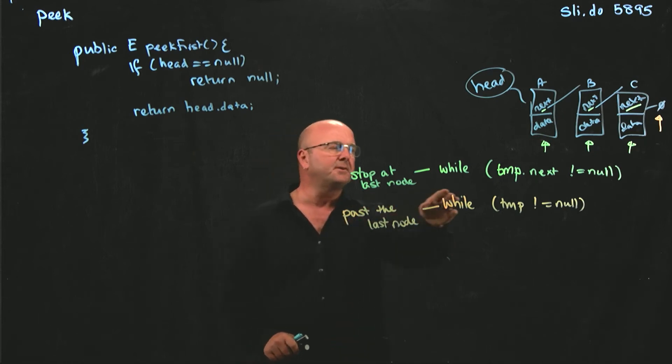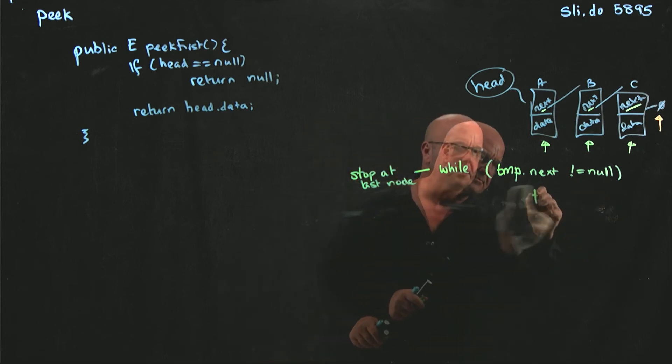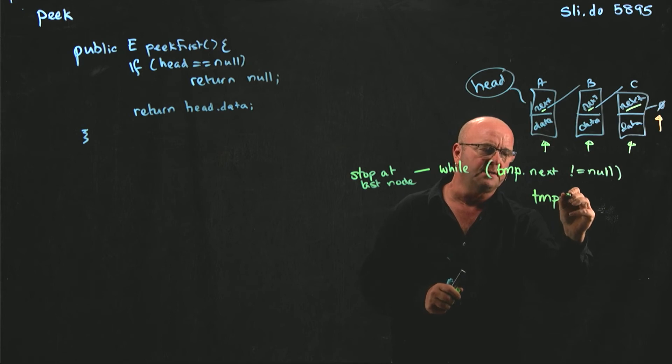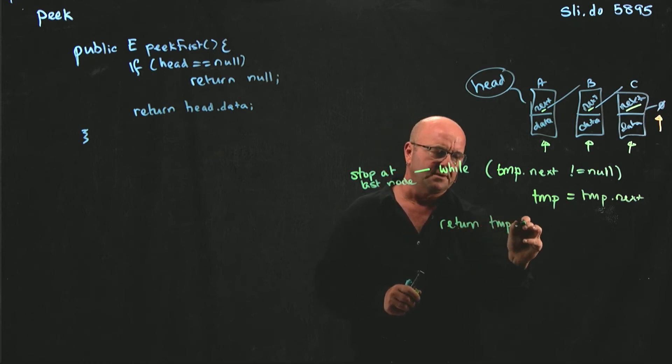In a peak last method, we would say, while temp.next is not equal to null, temp is equal to temp.next, and then return temp.data.